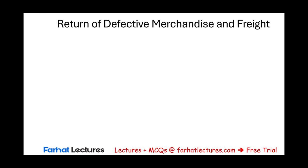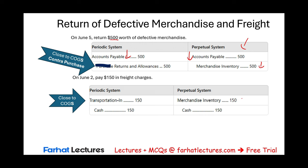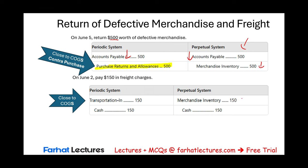Let's look at the return of defective merchandise and freight. On June 5th, the company returned $500 worth of defective goods. Under a perpetual system, we reduce accounts payable and reduce inventory immediately. Under a periodic system, we reduce accounts payable, but we keep track of Purchase Returns and Allowances in a separate account. Purchase Returns and Allowances is a contra-purchase account — it's a sub-account of cost of goods sold.